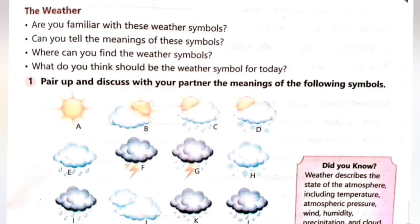Weather, yani ke mowsem kya hai? Mowsem jo hai, wo mahol ki halet ko biyan kerta hai. Darajah hararat ko biyan kerta hai. Mahol ka dubao, hawa, numi, wazan, or badal waghara ka jo hai, wo ehata kerta hai. I'll tell the meaning of these symbols. Now we'll get to know where you find the weather symbols.